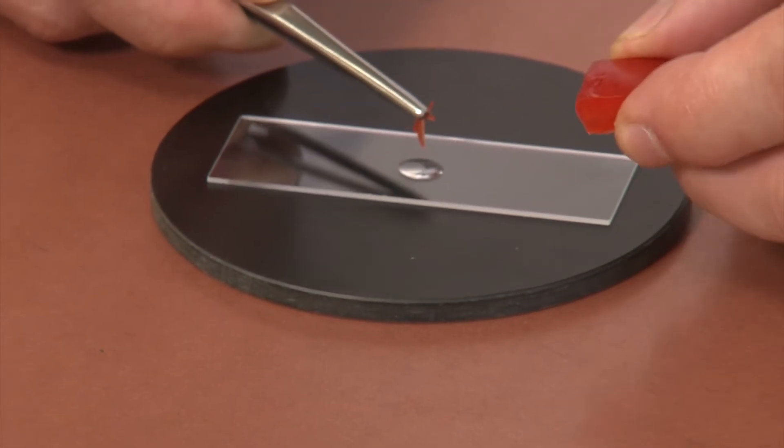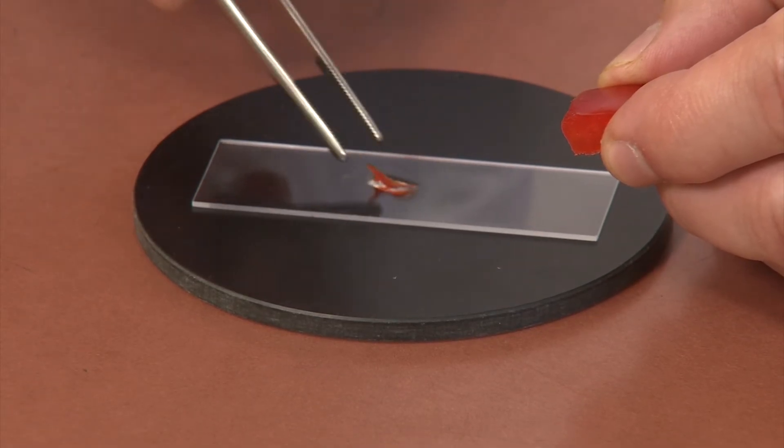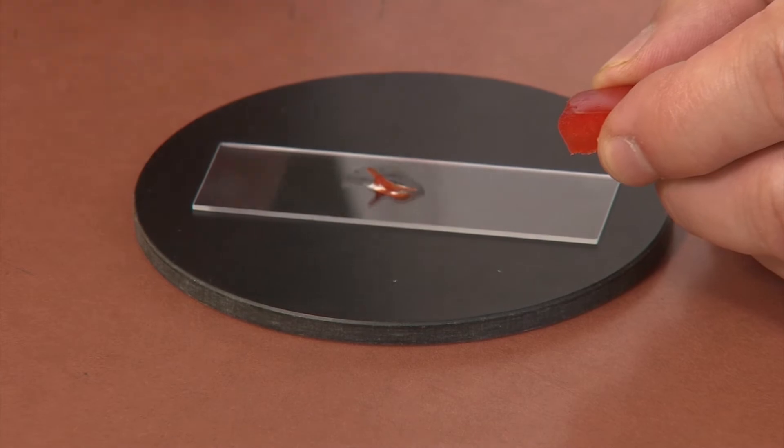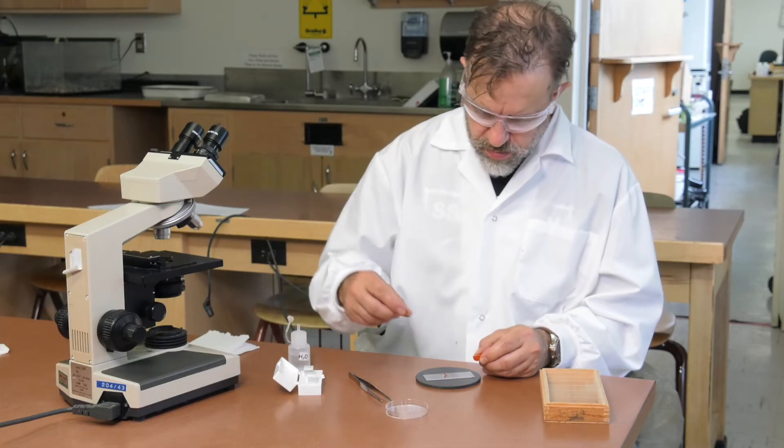Place the skin in the drop of water on your slide with the outer layer facing up. Be sure not to flip your peel so that pulp is lying on top of the peel. Apply a cover slip.